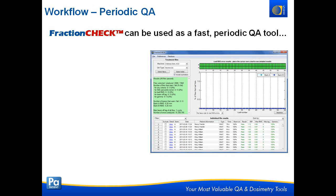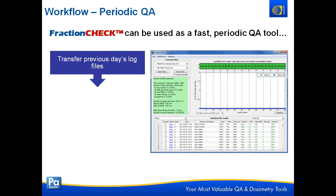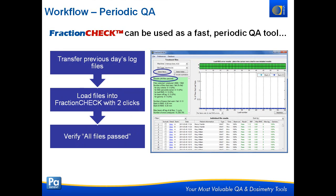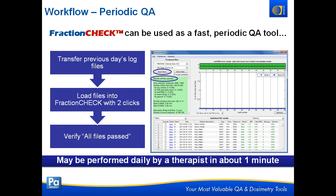So, how does this work in the clinic? It can be used for periodic QA — you take your previous day's log files, load them into FractionCheck with two clicks, and it processes about 250 fields a minute, which is typically about the number of fields you'll deliver in one day. In about one minute, it should pop up and say all files passed. This is very simple — you can even have your therapist do that in about one minute a day.